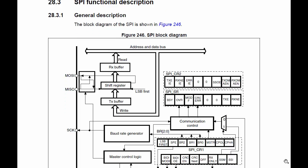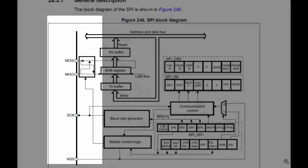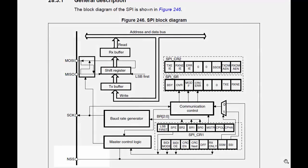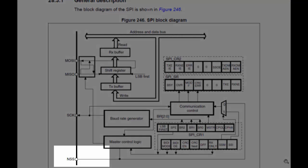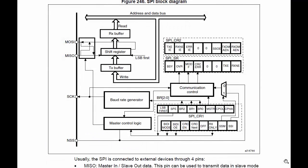You can see from this block diagram that four pins are coming out: MOSI, MISO, Clock, and NSS. The SS pin is for slave select — when this block acts as a slave, the master has to pull this pin low.